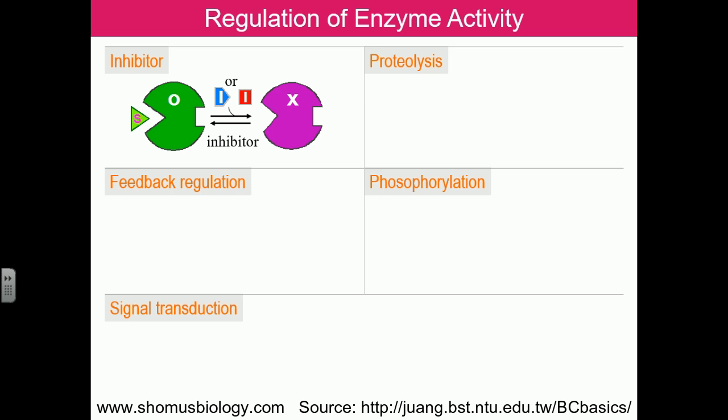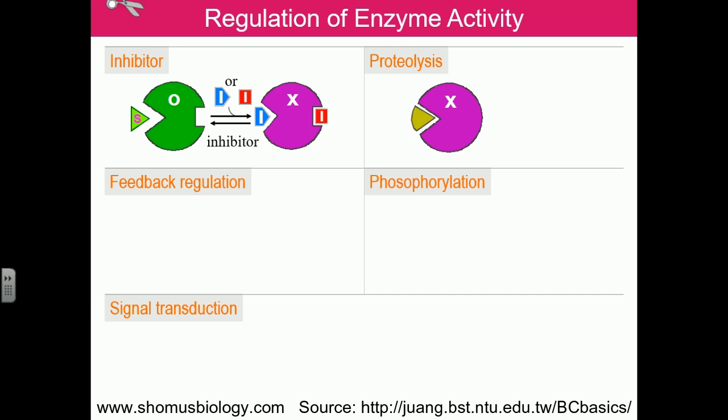An inhibitor can bind and compete for the active site, or it can bind to a distant allosteric site. Proteolysis is another mechanism that prevents the enzyme from being active, because proteolysis destroys the enzyme into smaller fragments of amino acids, and it will no longer be functional.